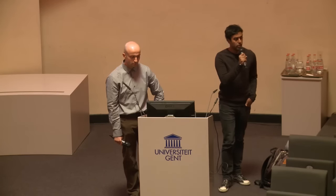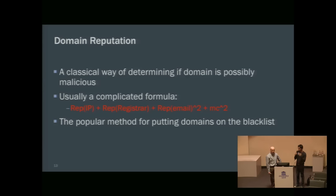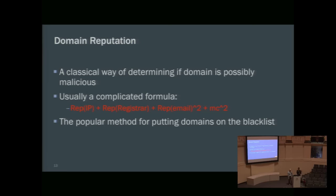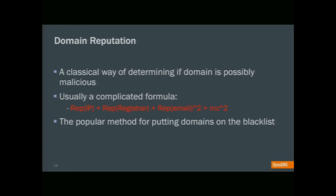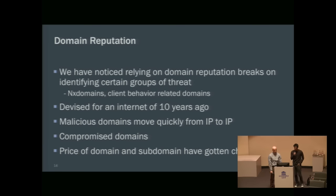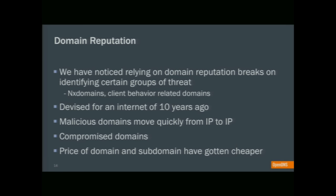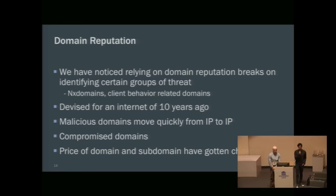The most popular method is domain reputation, which has been used for the last 10 to 15 years. Security companies use some complicated formula involving the reputation of the registrar, the registrar email, and other factors to come up with a score — if it exceeds a threshold, the domain gets added to a blacklist. The problem is this method was developed when the internet was considerably different. While domain reputation has its place, there are new categories of threats that easily evade it.